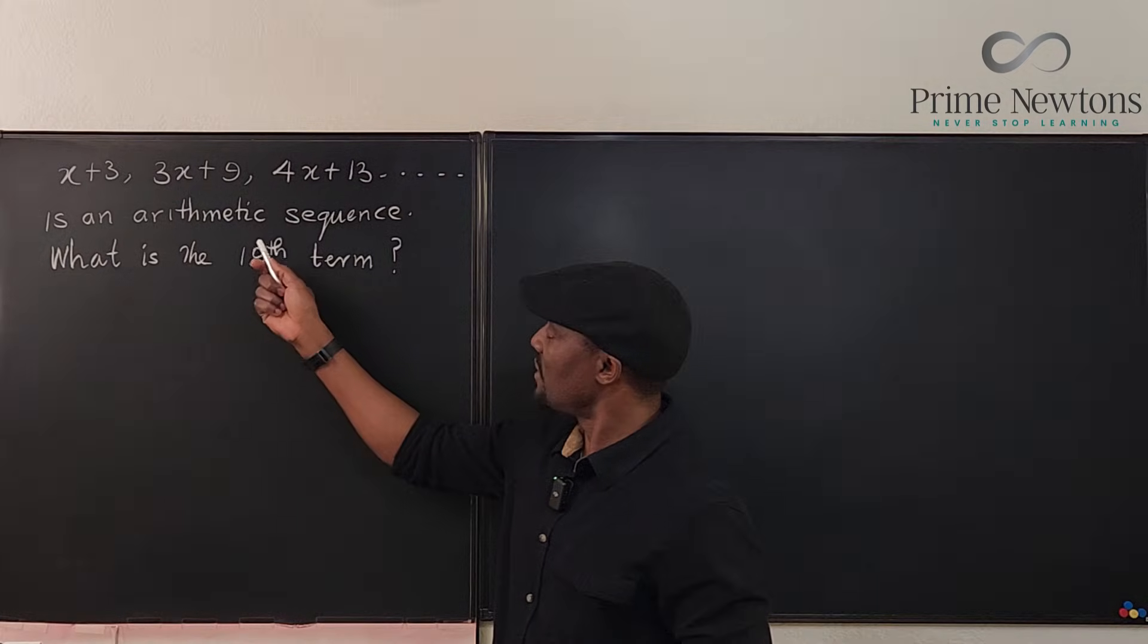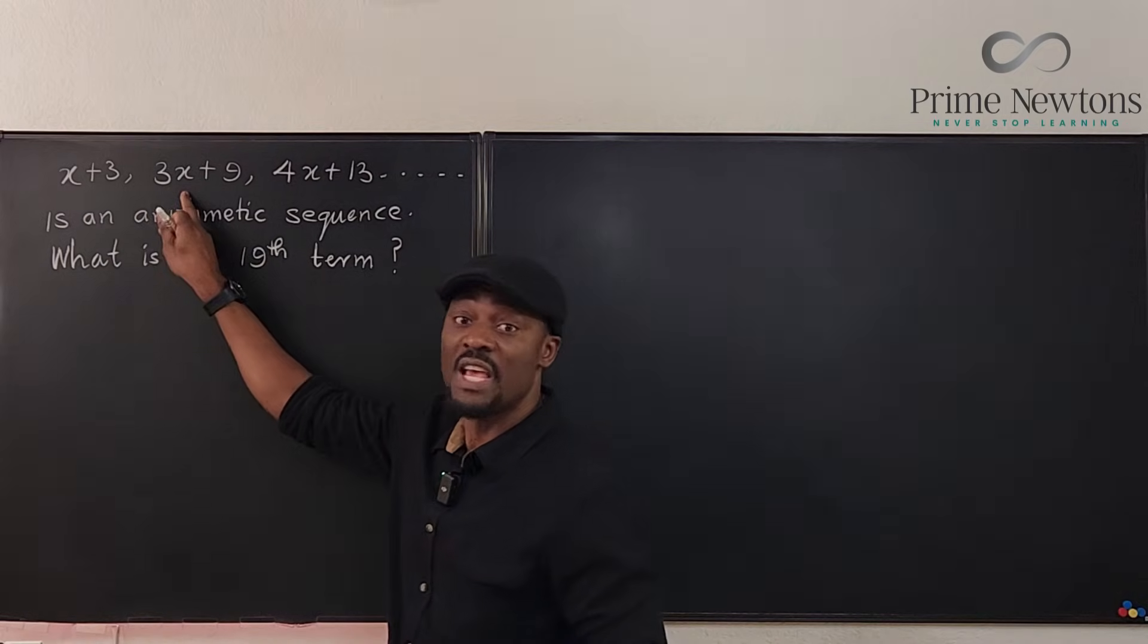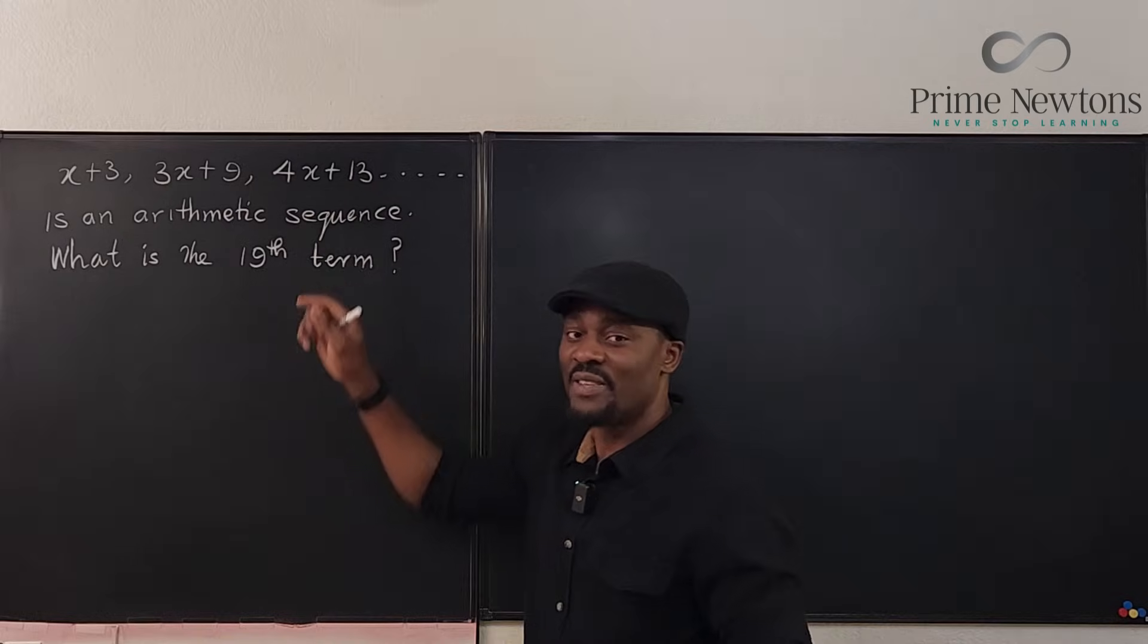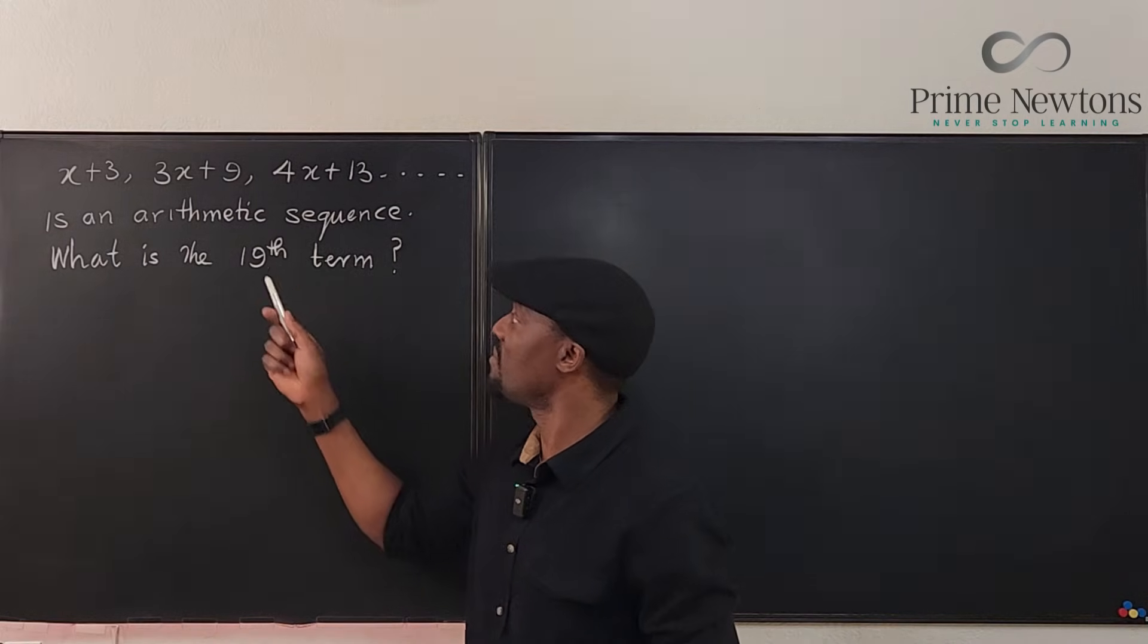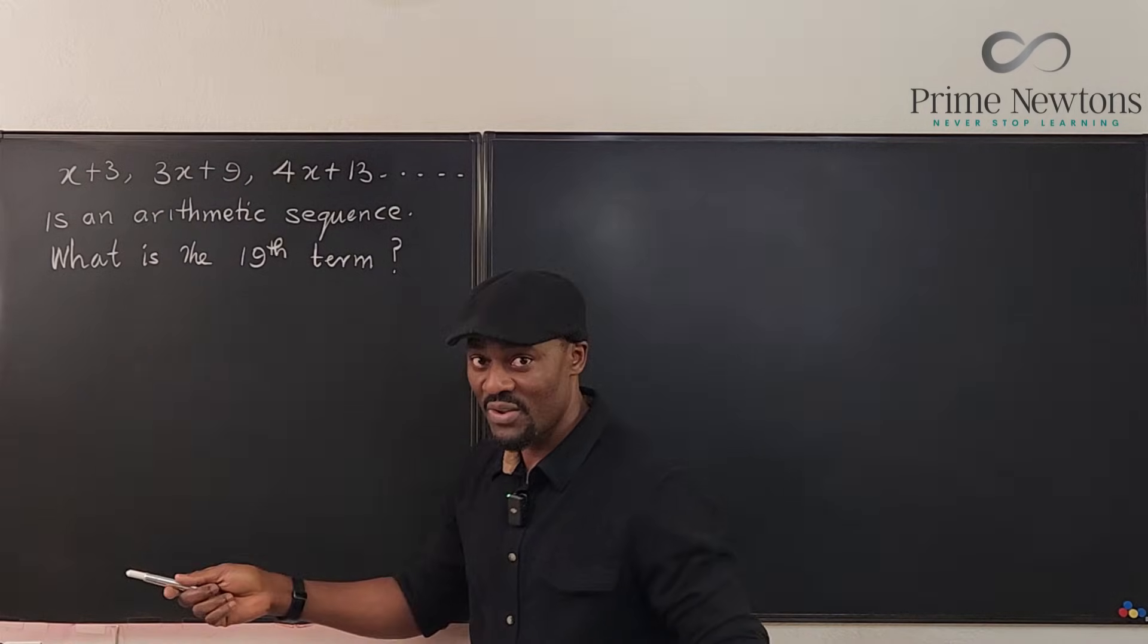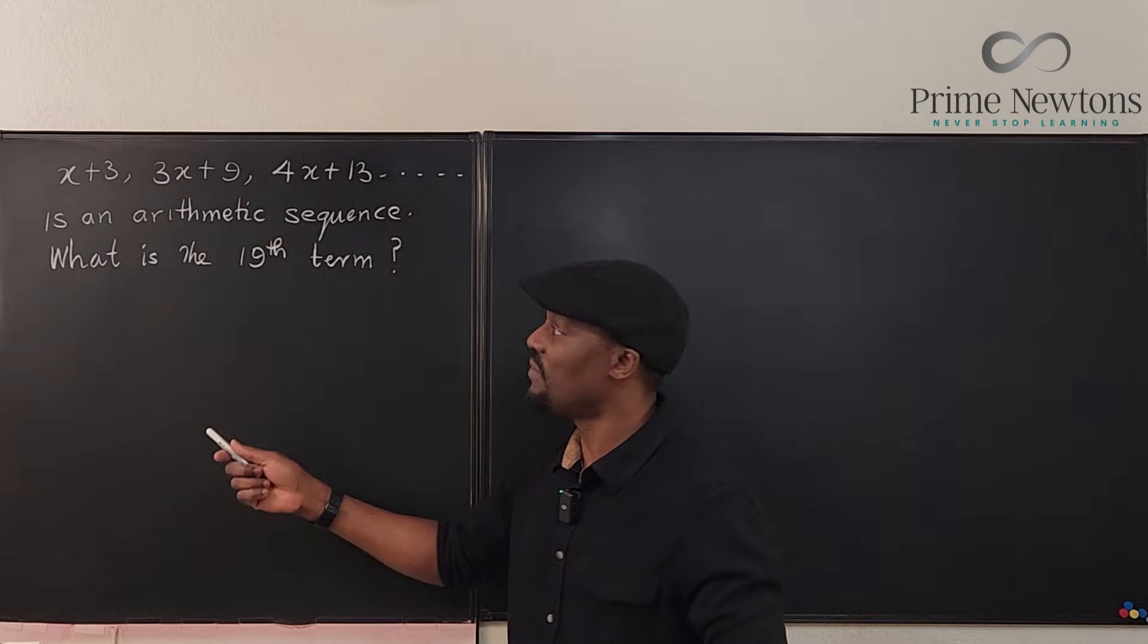So if you look at this, there's a common difference which means if you subtract this from this, you will get the same answer as if you subtract this from this. I think too much math caused people to think that the 19th term is going to be an expression in terms of x, but no, you cannot predict that. Okay, so what we do is we find the common difference.